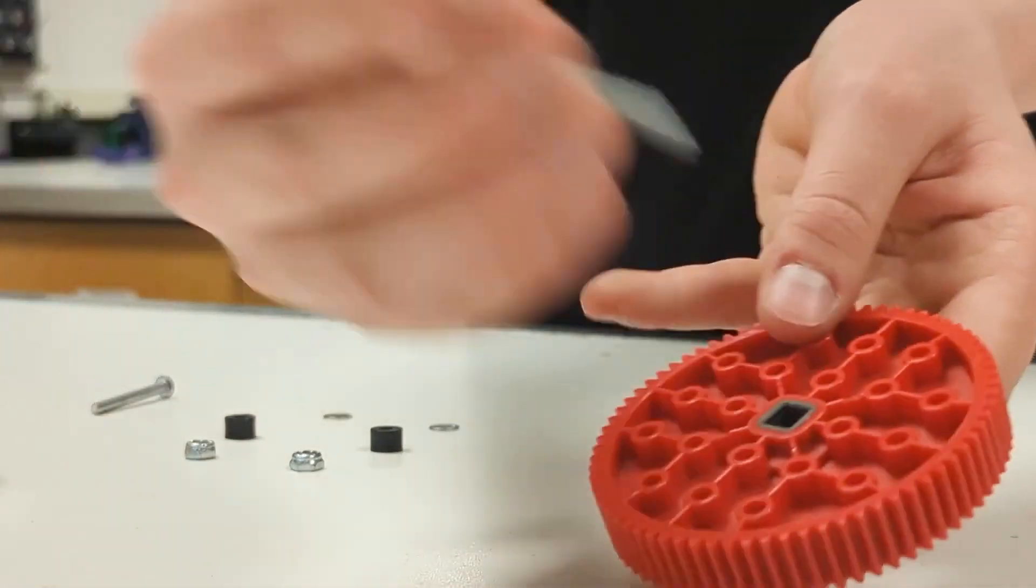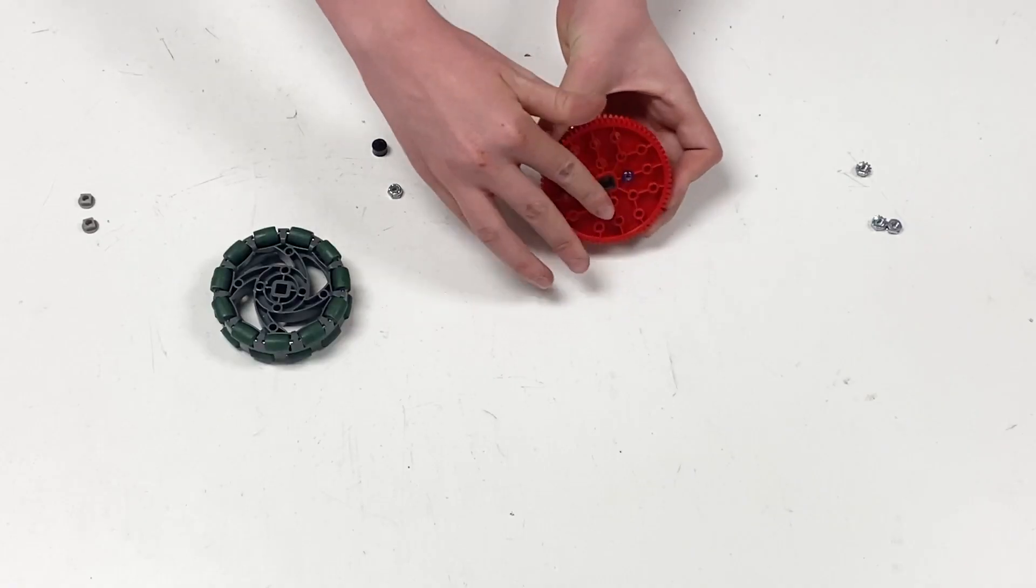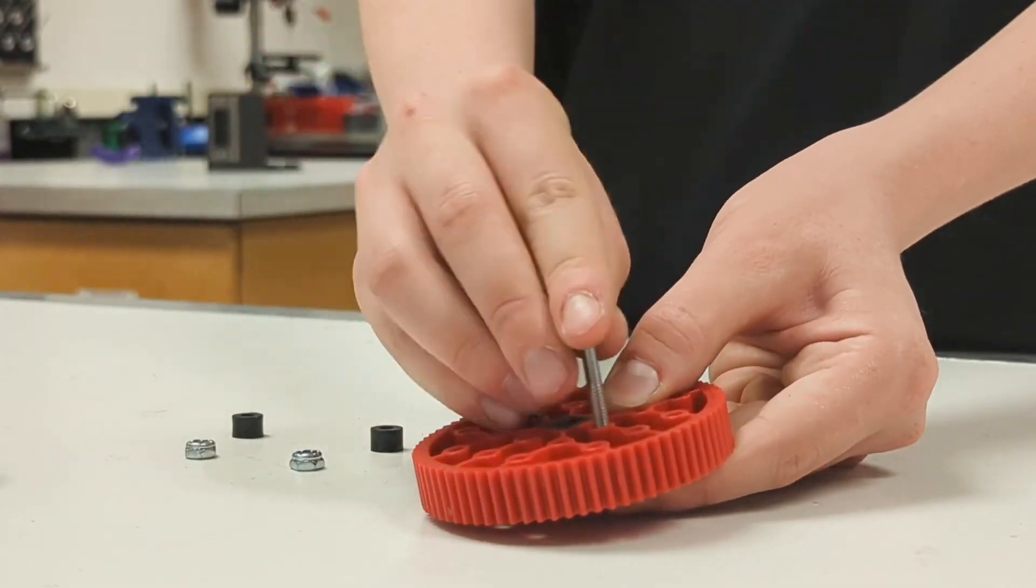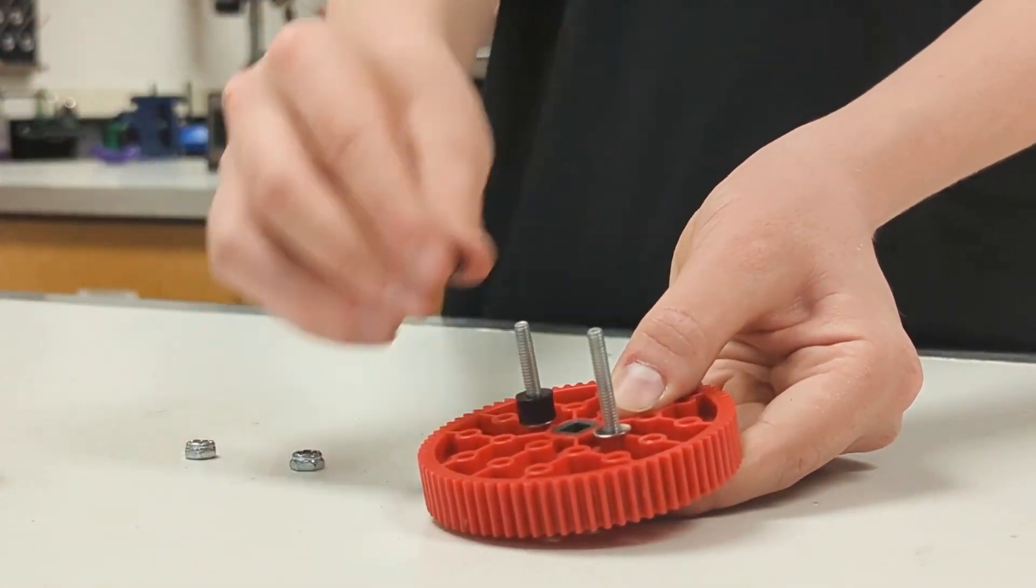First thing we're going to do is place two 1.5 inch screws into the inner loops of these gears. Now you're going to place the washers onto the gear, then we're going to place the spacers onto the gear.